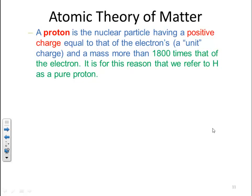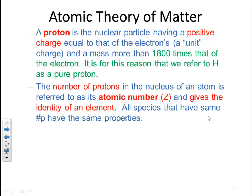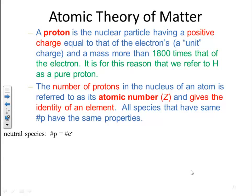It is for this reason that we refer to the hydrogen atom as a pure proton. The number of protons in the nucleus of an atom is referred to as its atomic number Z, and gives the identity of the element. All species that have the same number of protons have the same properties. For a neutral species, the number of protons equals the number of electrons. So for hydrogen with atomic number 1, a neutral species would have one proton and one electron.